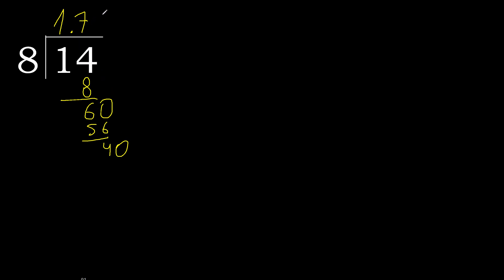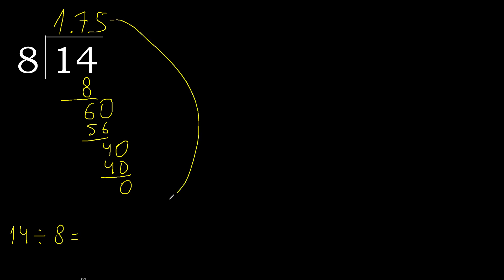8 multiplied by 5 is 40. Subtract 0. 0, therefore finish it. 14 divided by 8 is 1.75.